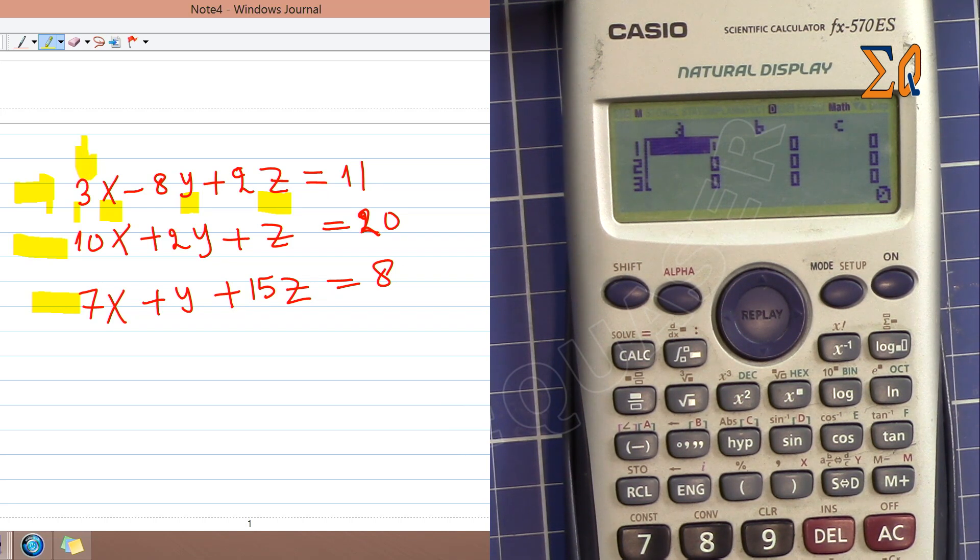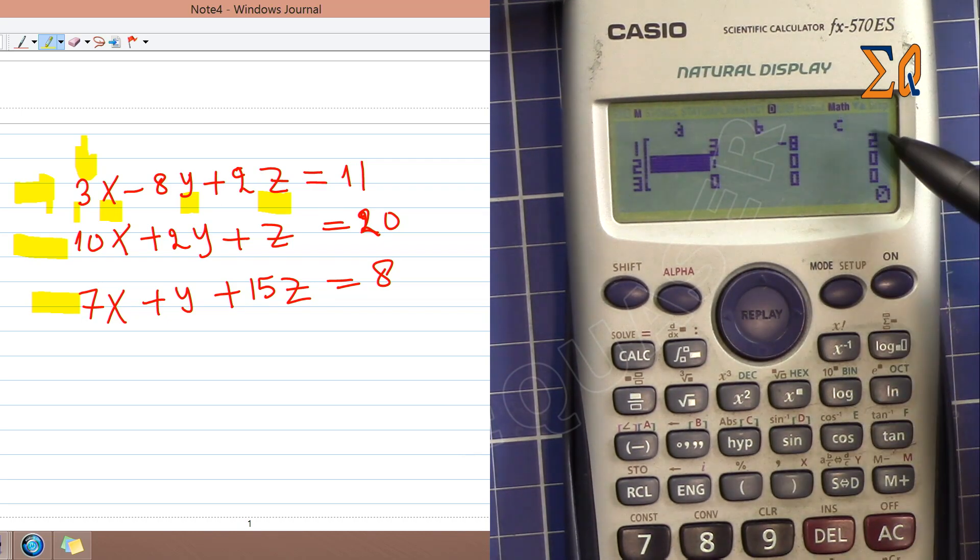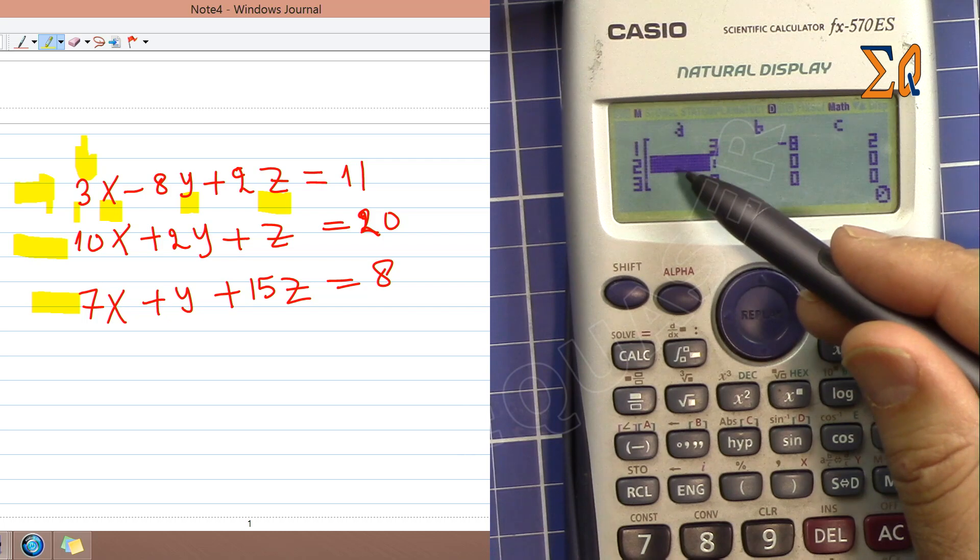The first values you can see here are 3, minus 8, and 2. I press 3, equal sign, minus 8, equal sign, 2, and then 11, equal sign. Once you press equal sign, the cursor moves to the next line.